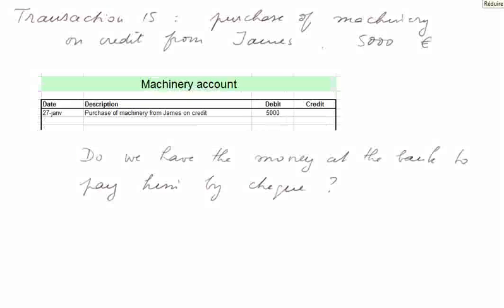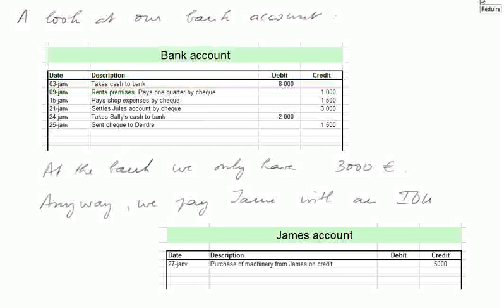Transaction 15: we purchase machinery on credit from James for 5,000 euros. The machinery account is debited 5,000 euros. Looking at the bank account, we can check whether we have the money to pay later — the bank balance is only 3,000 euros in debit (10,000 minus 2,500, 3,400, and 3,700). We pay James with an IOU for now, but will need to pay by cheque later. James' account is credited 5,000 euros.